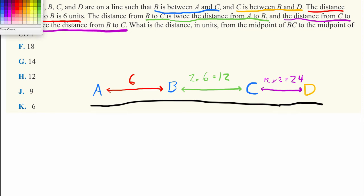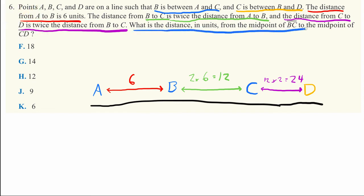Now, we're finally ready to answer this question. It asks us, what is the distance in units from the midpoint of BC to the midpoint of CD? So what's the midpoint? Well, the midpoint of BC is the point right in the middle of it, and the midpoint of CD is the point right in the middle of that.